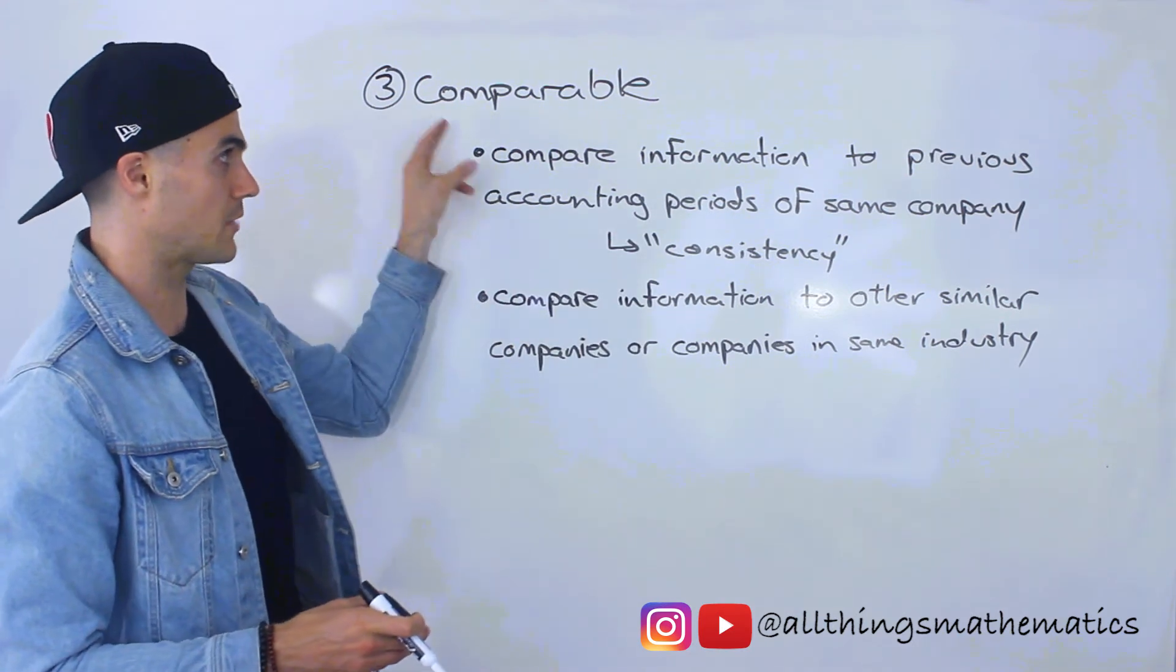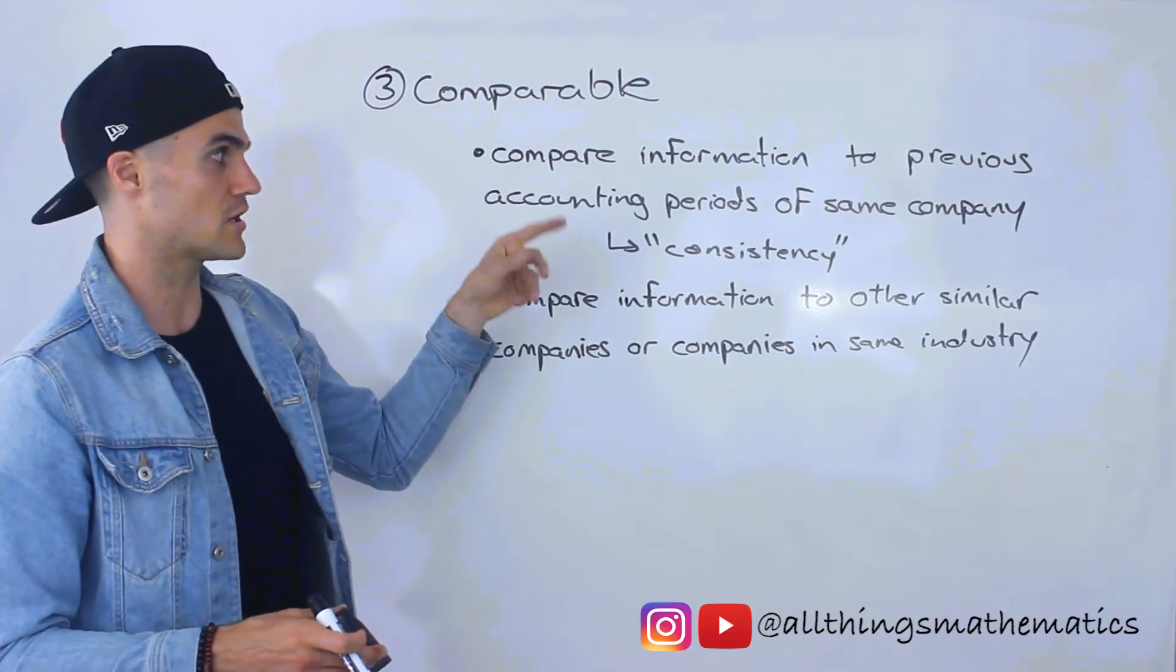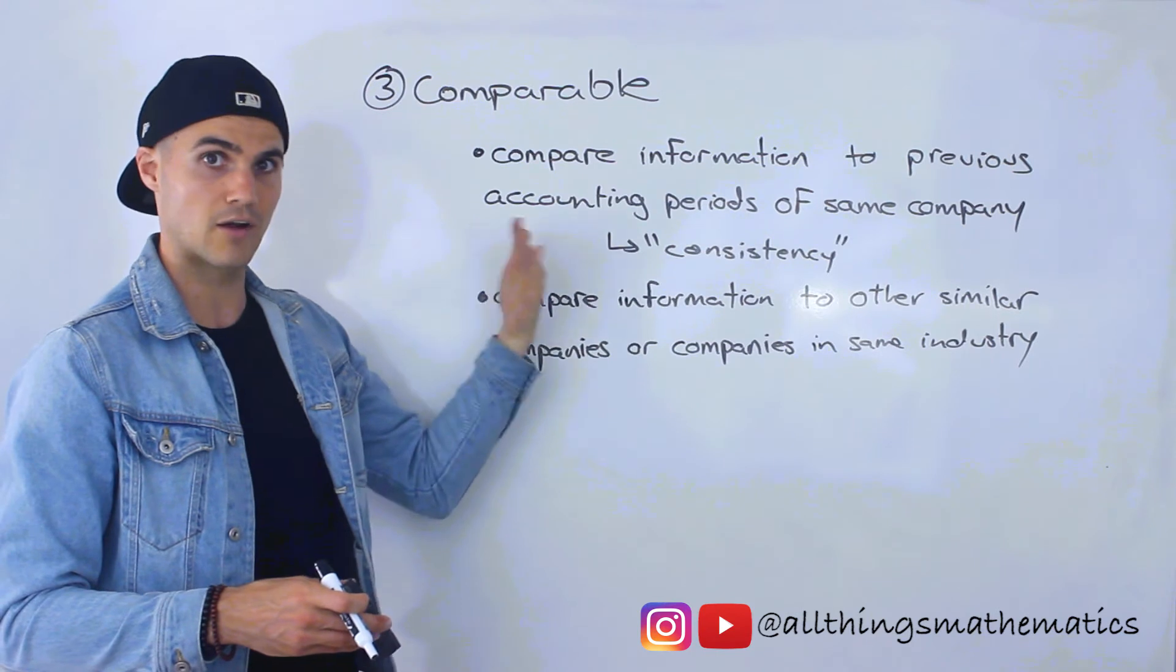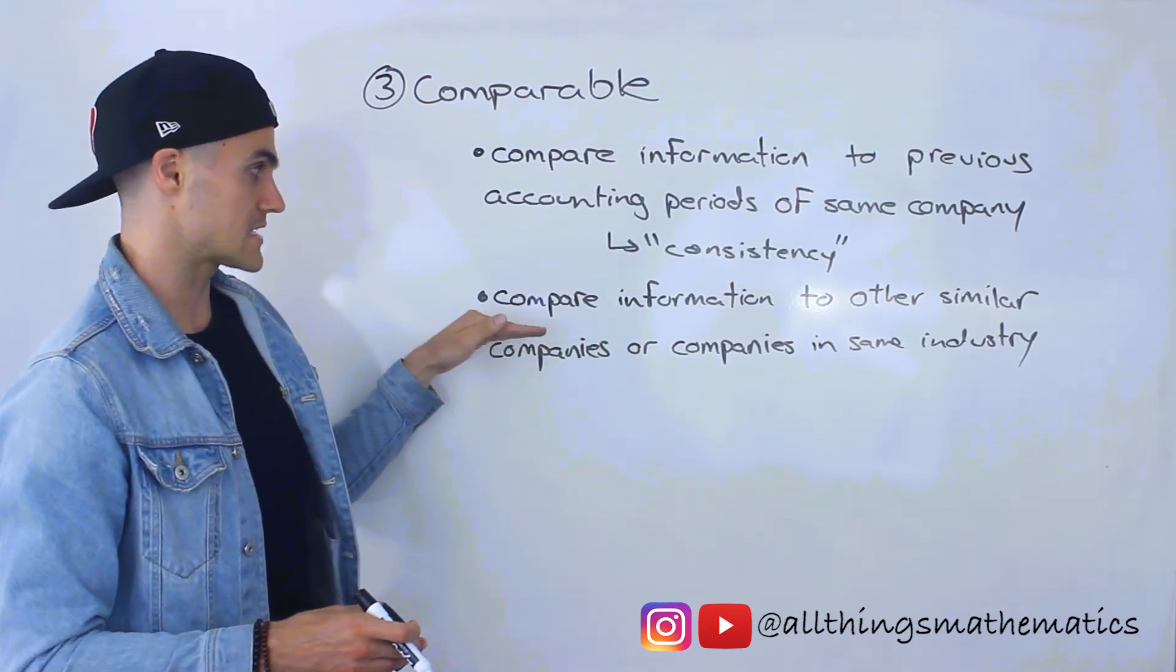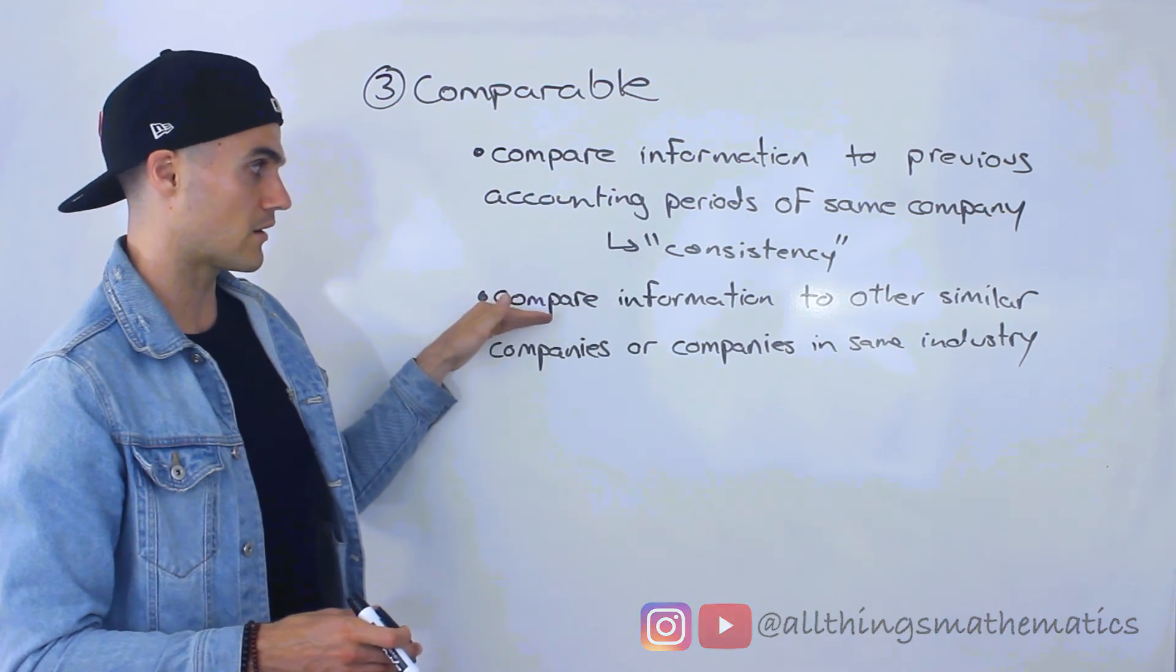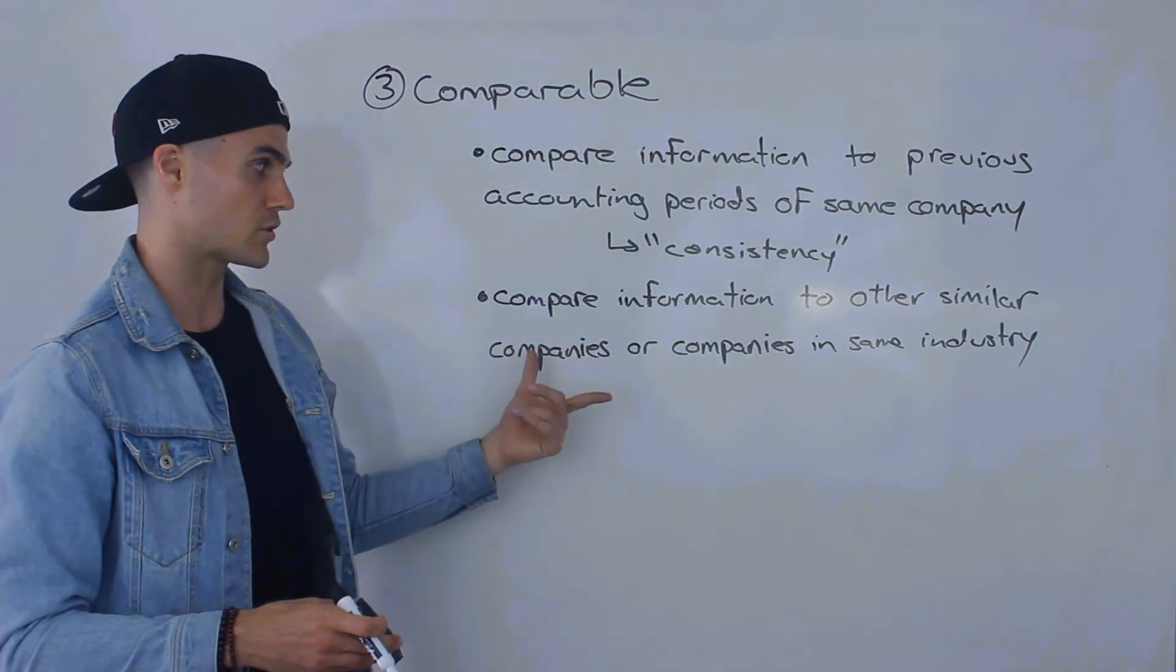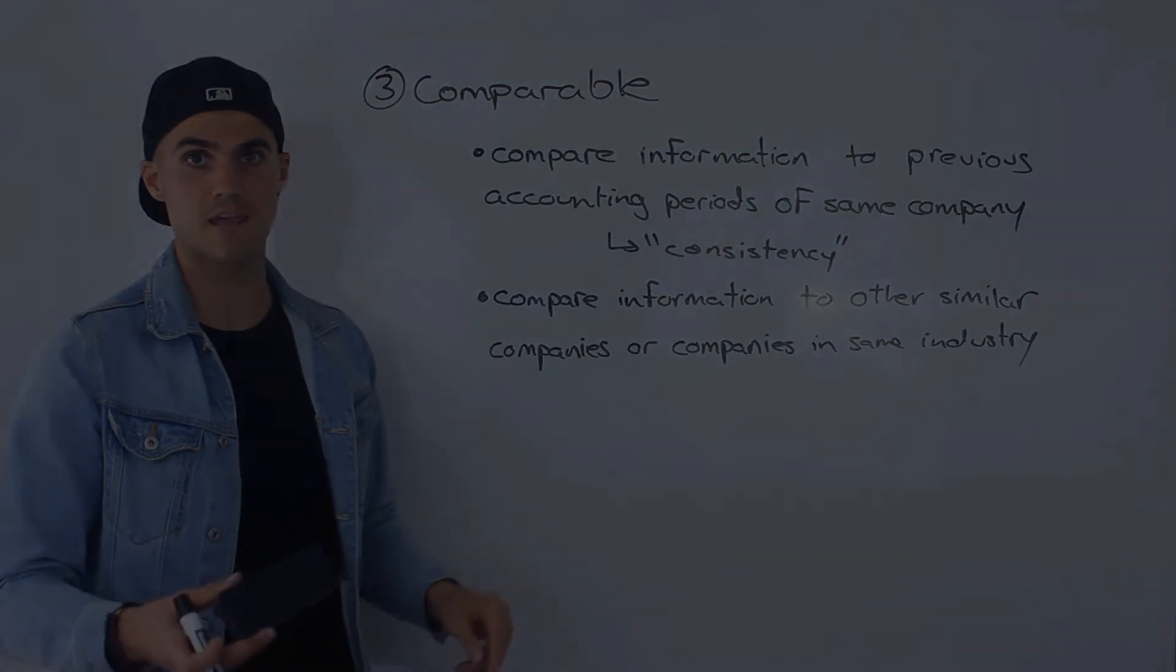Right? So two big points. Comparable means compare information of the same company to previous accounting periods, to previous financial information in the past. And then second point is you should be able to compare information to other similar companies or companies in the same industry.